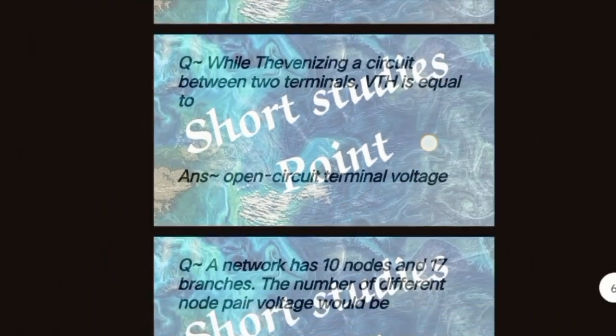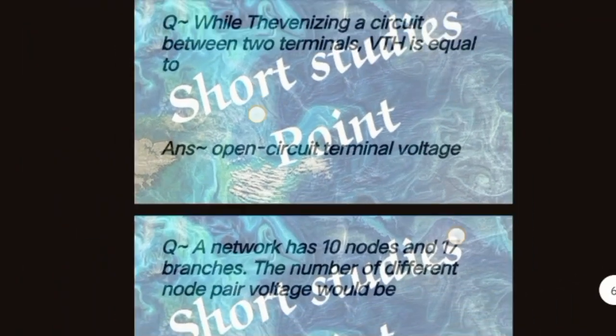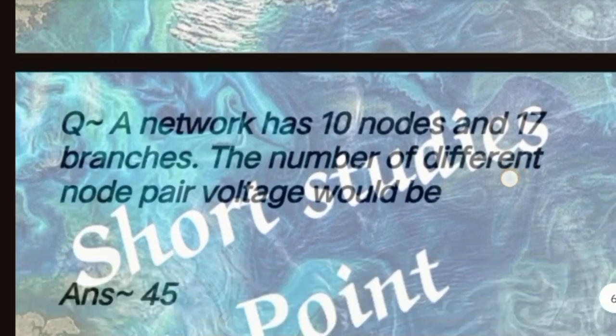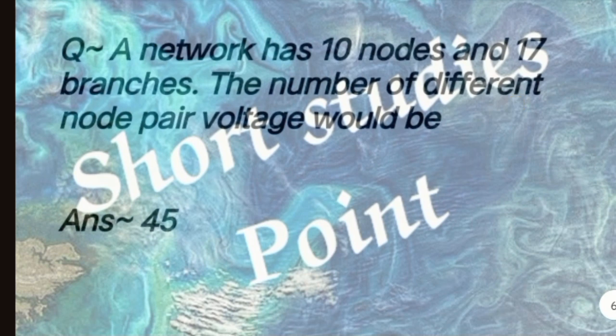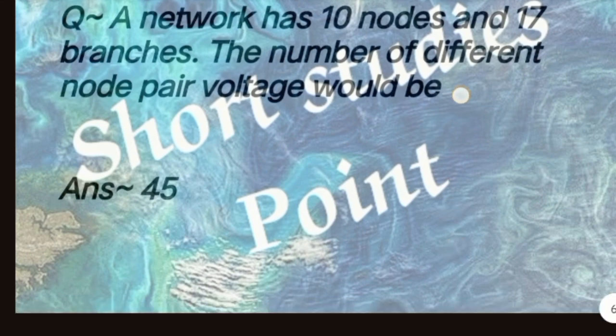Next question: While Thevenizing a circuit between two terminals, Vth is equal to answer: open circuited terminal voltage. Next question: A network has 10 nodes and 17 branches. The number of different node pair voltages would be answer: 45.